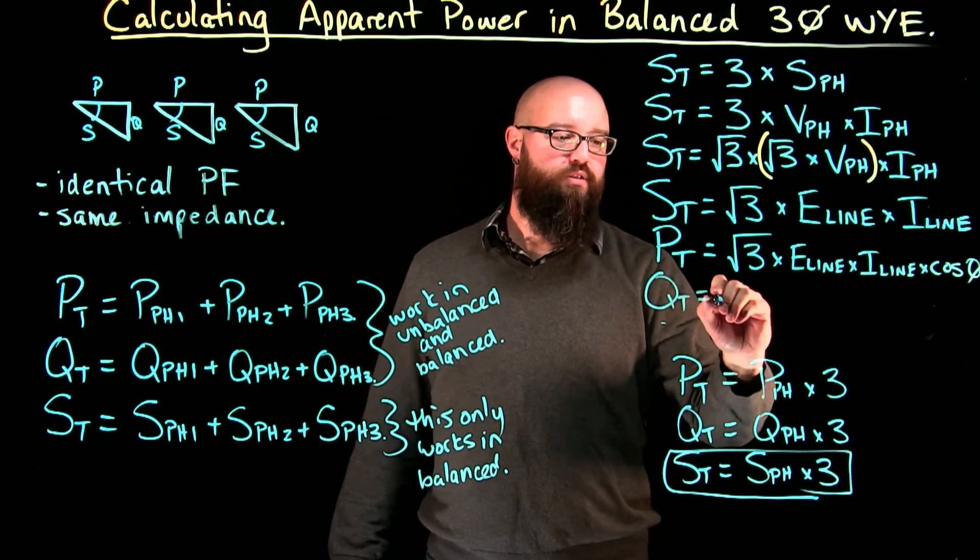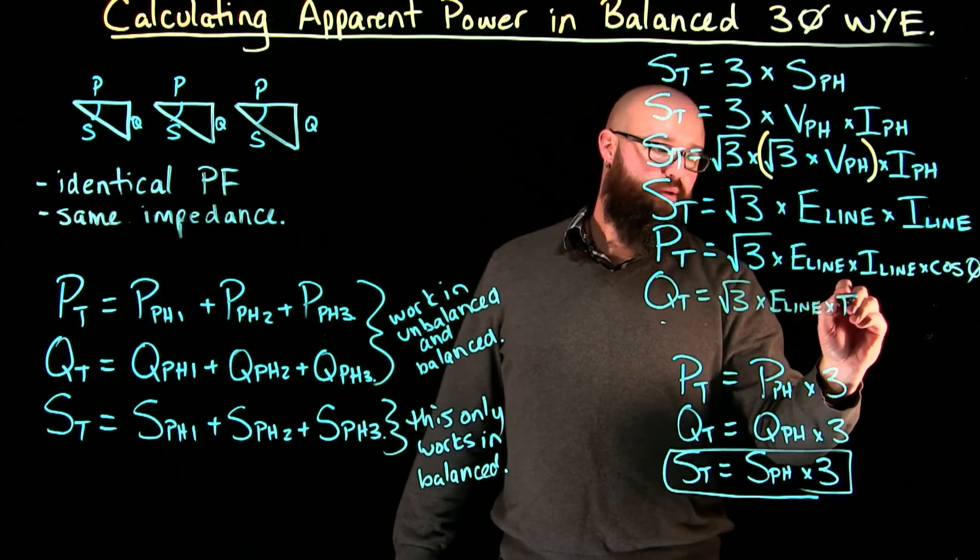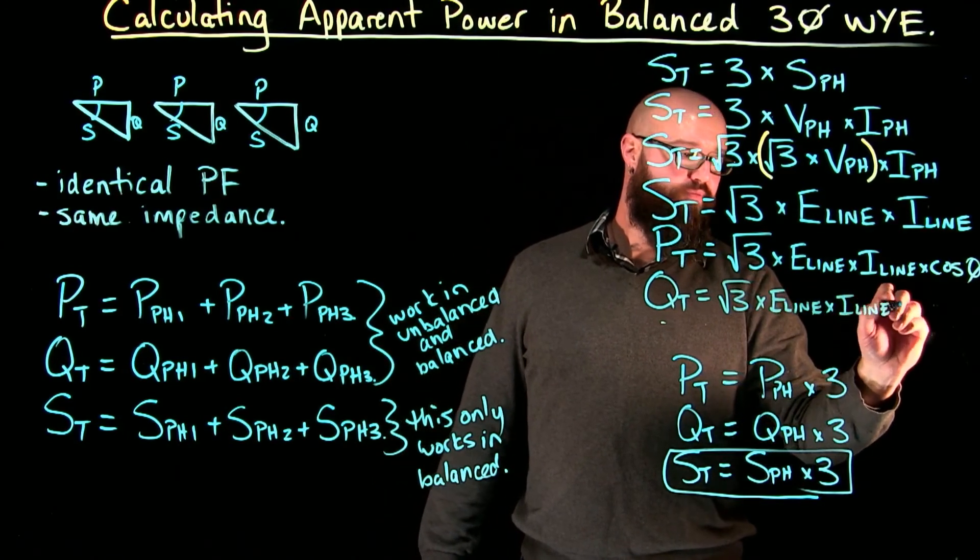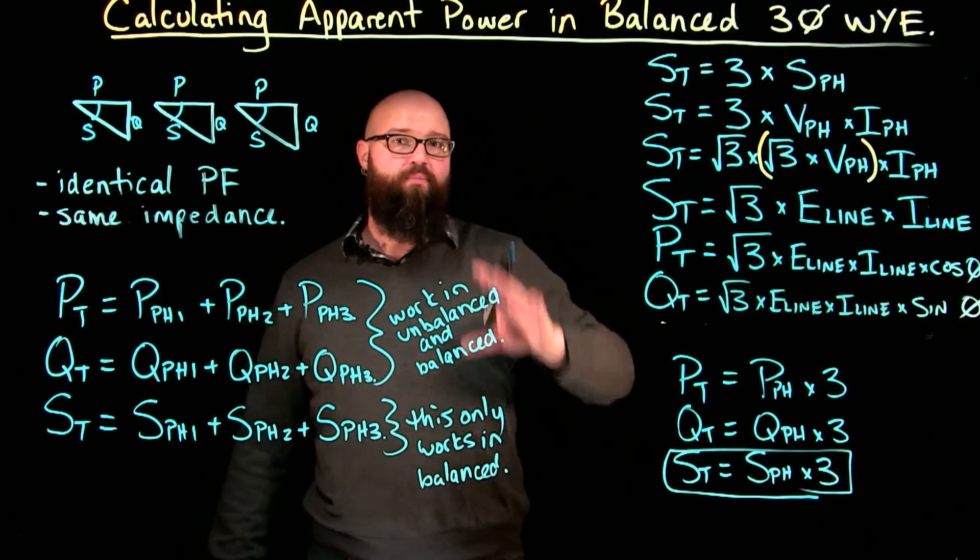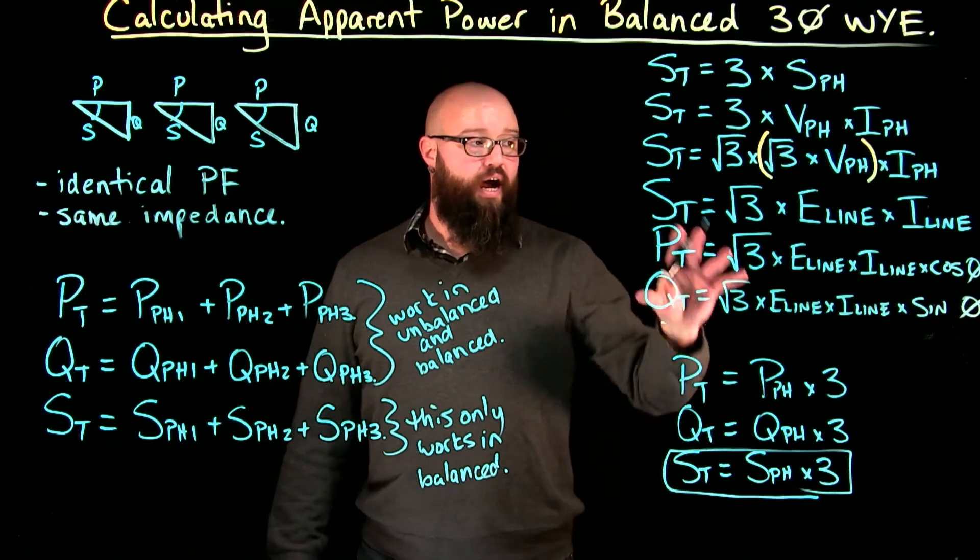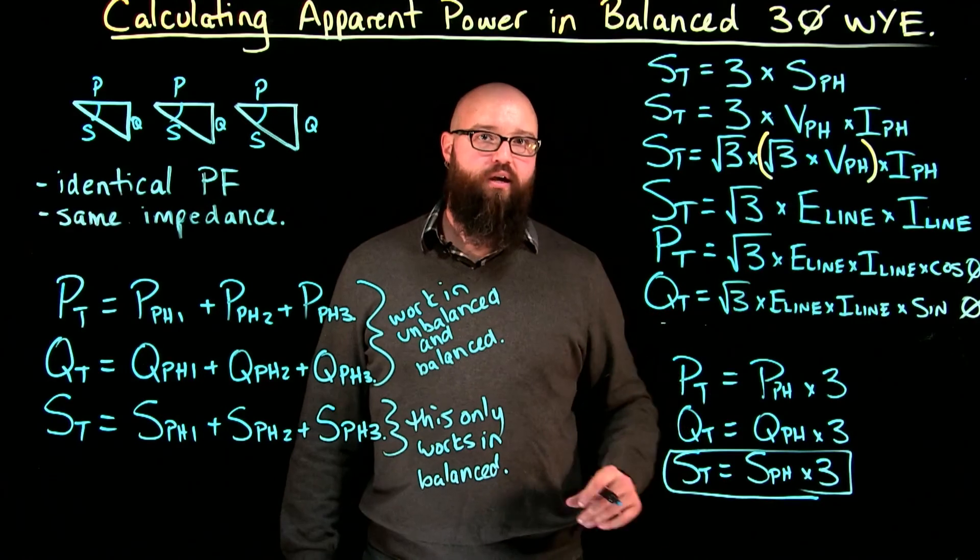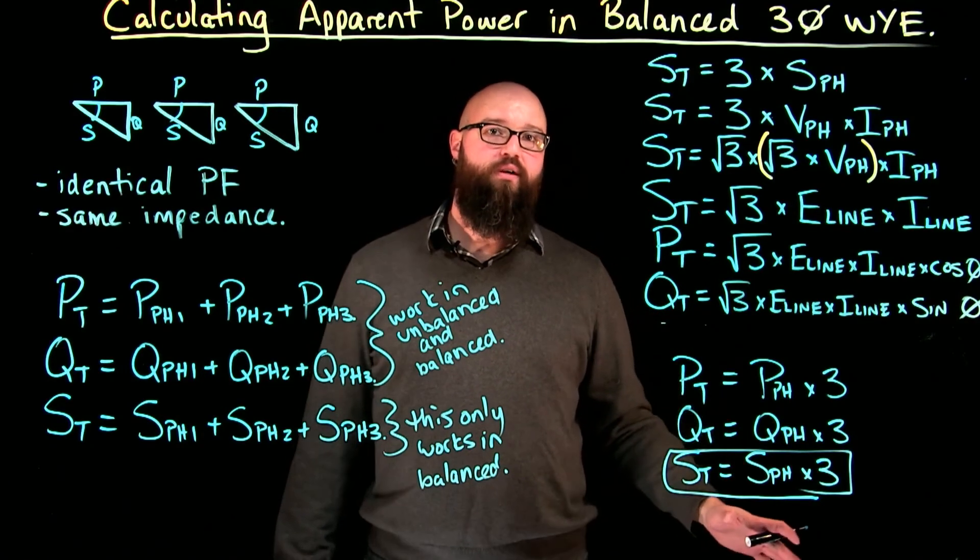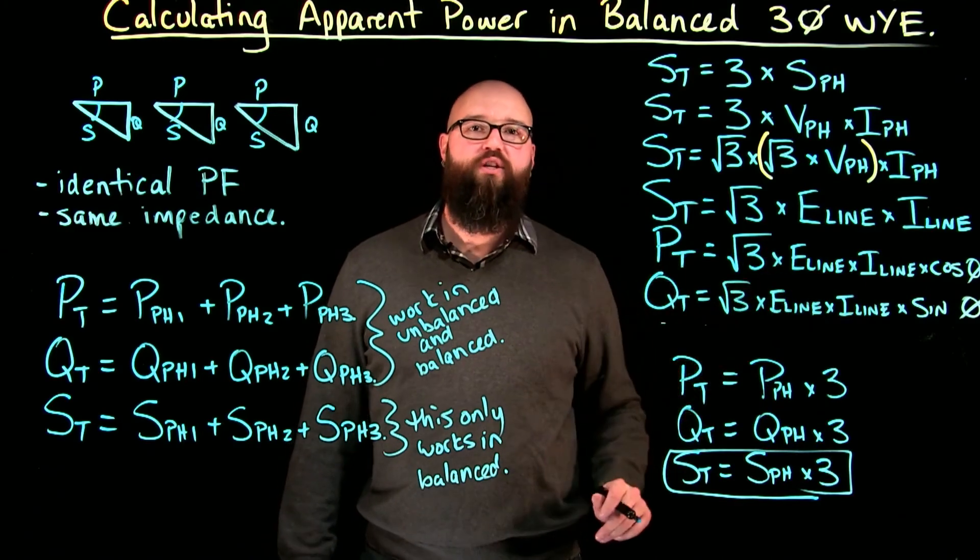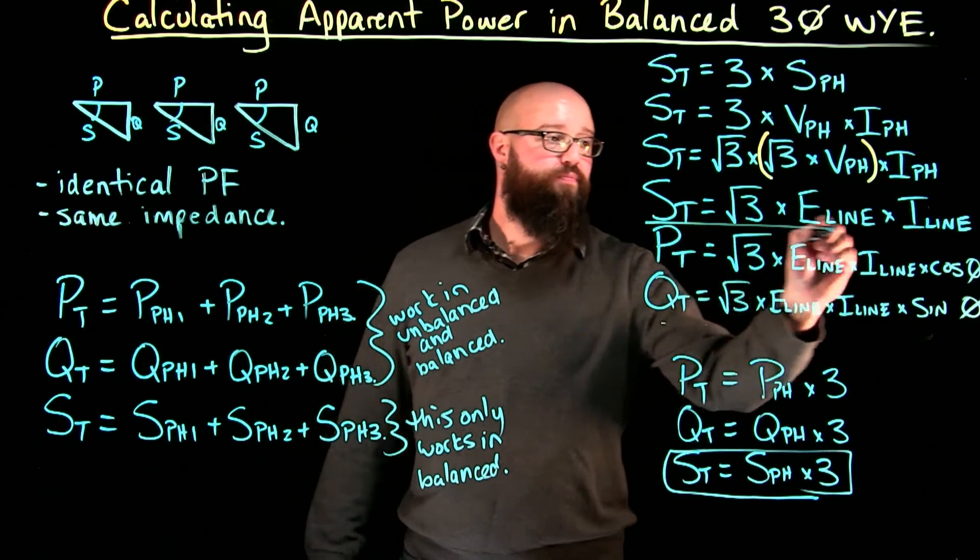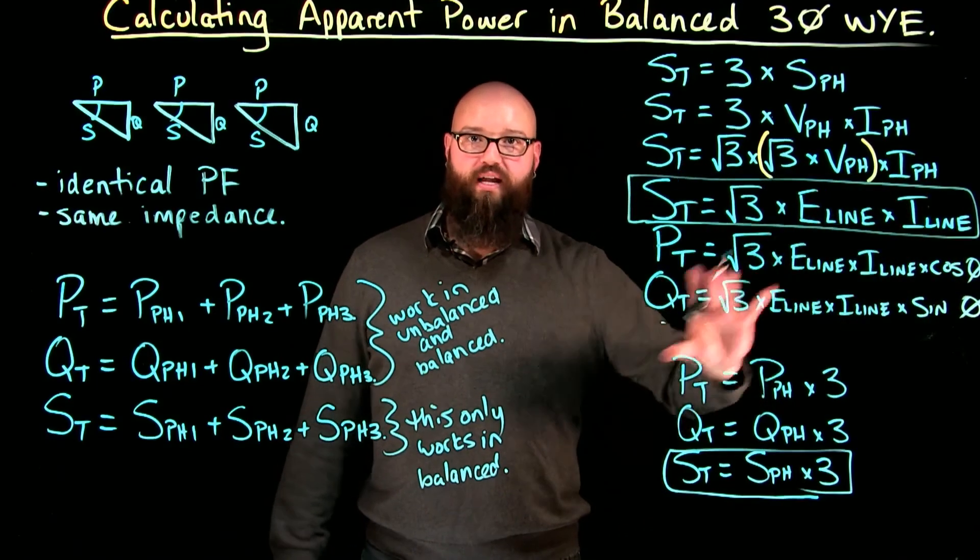Q total equals root three times E line times I line times sin theta. That way, if I'm given an FLA of a motor and say the phase voltage, I can take this and convert it into total apparent power for my circuit. And from there, I can go and find the total power of my circuit, or I could find the total reactive power of my circuit. Or we could work with any combination therein, as long as we can transpose, really, this formula right here. That's going to be our formula for any of these calculations.